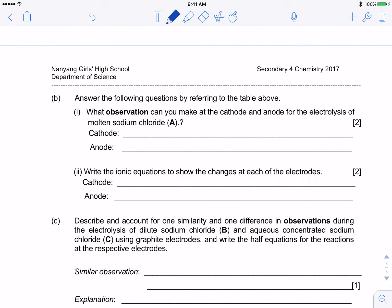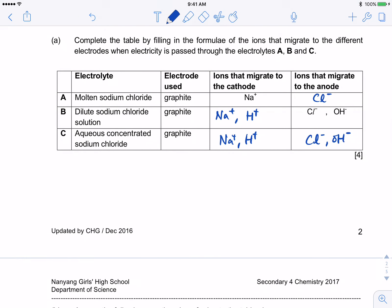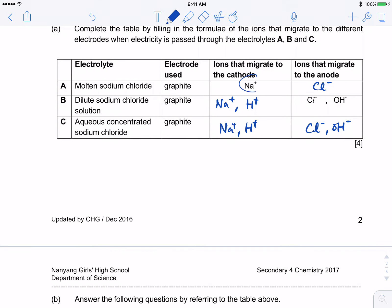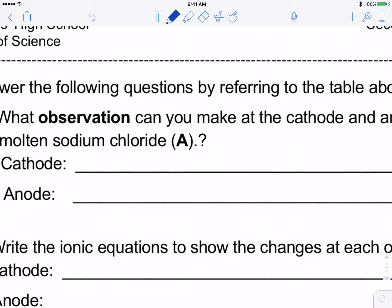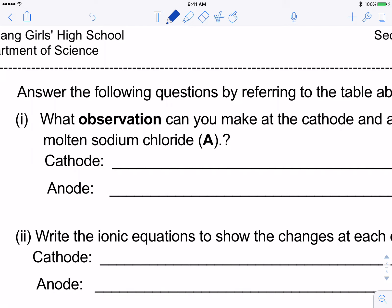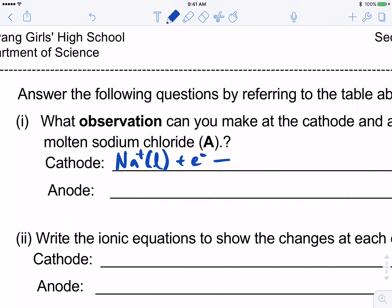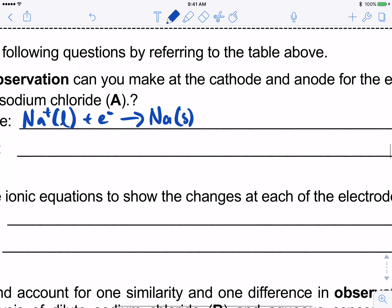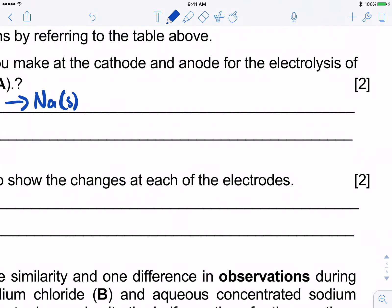What observations can be made at the cathode and anode for electrolysis of molten sodium chloride? At the cathode, it is just sodium being discharged. The half-equation is: Na+(l) + e− → Na(l). Based on this, we can write the observation.